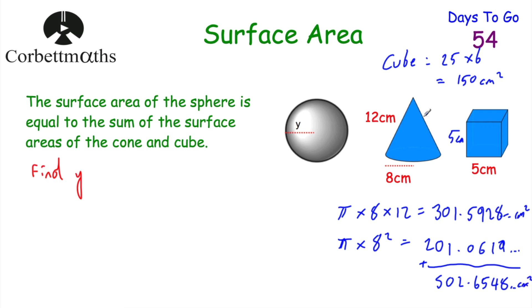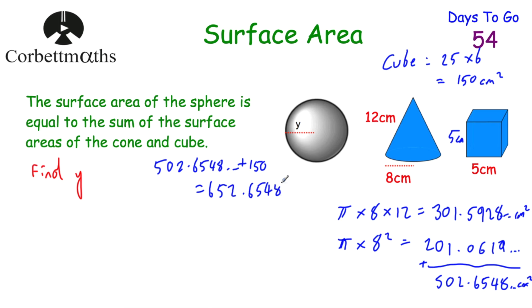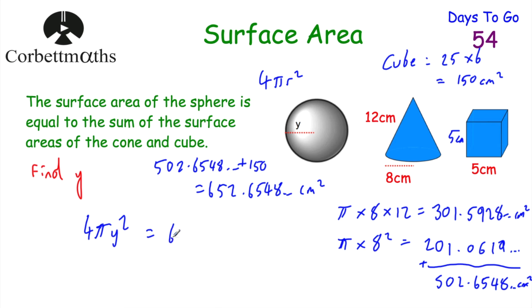We've got the surface area of the cube and the cone. Adding them together gives the sum of the surface areas, which equals the surface area of the sphere. So 502.654 plus 150 equals 652.6548 centimetres squared. Since the surface area of a sphere is 4 pi r squared, and the radius is y, we write 4 pi y squared equals 652.6548.